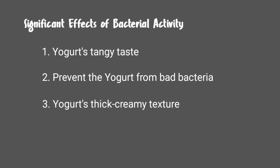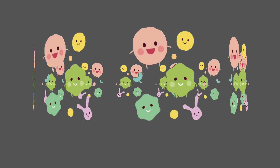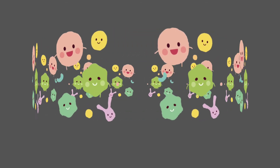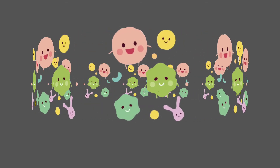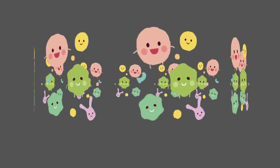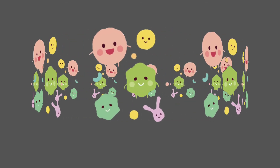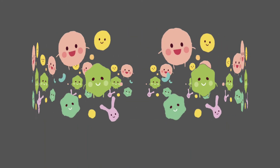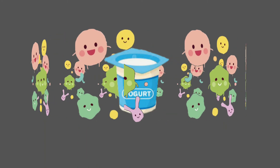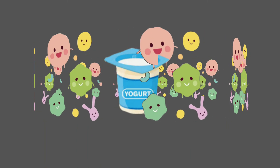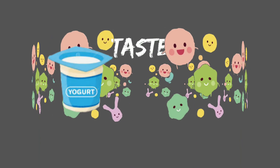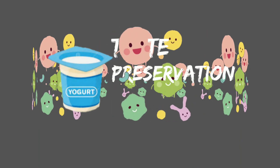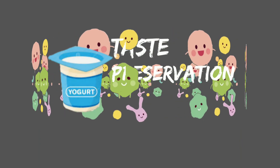As the bacterial activity continues, the proteins of the milk begin to coagulate and curdle, giving the yogurt a thick creamy texture. In a nutshell, a specific group of bacteria called lactic acid bacteria plays an important role in the overall production of yogurt, as these are mainly responsible for its taste, preservation, and texture.